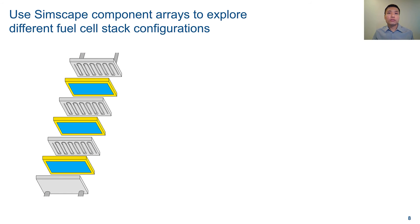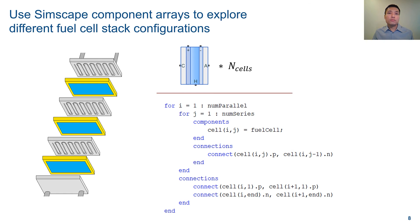Finally, you will need to assemble many fuel cells into a stack to produce the required voltage and current for your application. As an approximation, you can simply scale up the equations in the fuel cell block by the number of cells. For the most detailed analysis, you can use the new Simscape component array feature to construct a fuel cell stack out of individual fuel cell blocks to explore different series and parallel configurations.